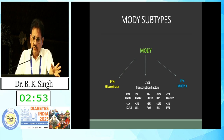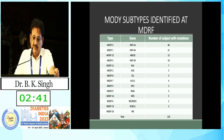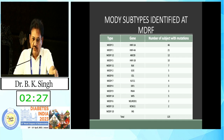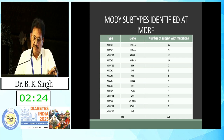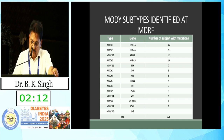MODY subtypes can be divided: transcription factor MODY accounts for 75 percent of cases and glucokinase MODY accounts for 14 percent. Data from Mohan's Diabetes Research Foundation shows that in India, MODY3 is most common, followed by MODY1, MODY12, and MODY5. Notably, MODY2 — which is more common in the European population — had only five patients diagnosed with glucokinase gene variations out of 125 cases studied.